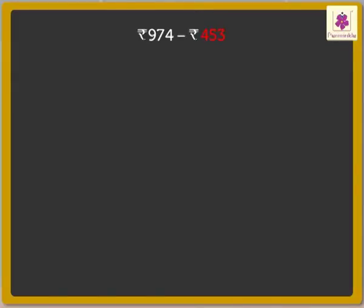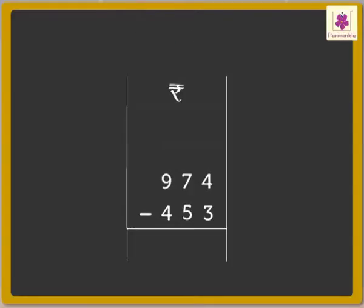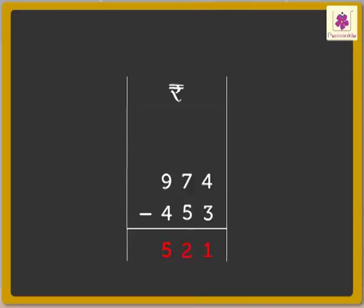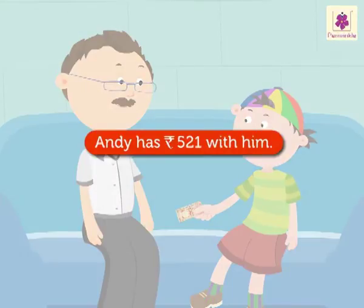4 minus 3 is equal to 1. 7 minus 5 is equal to 2. As a result, the difference is 521 rupees. Thus, Andy has 521 rupees left with him.